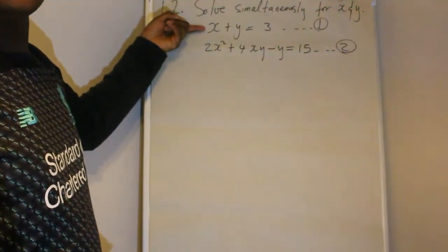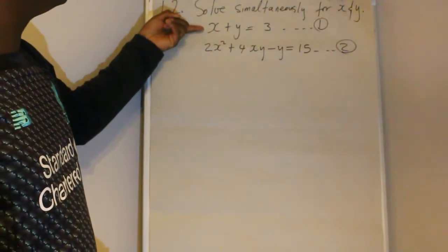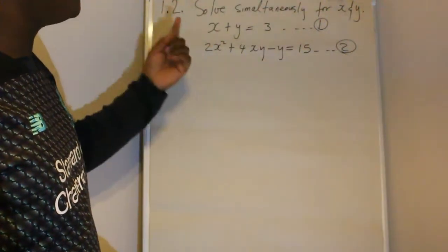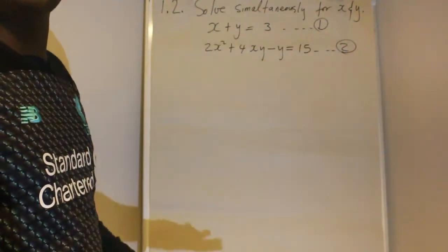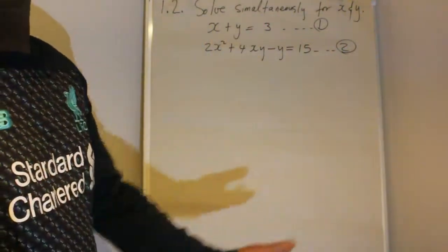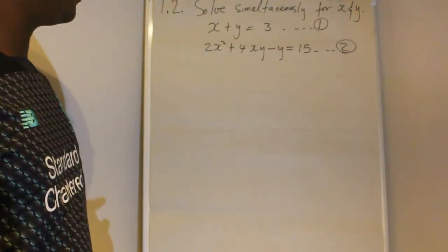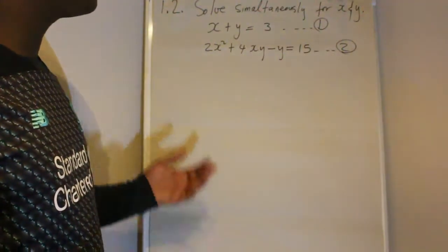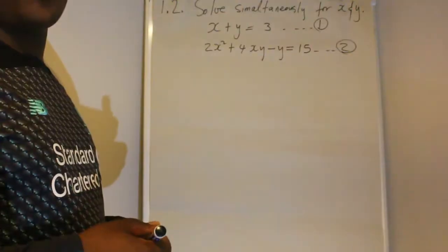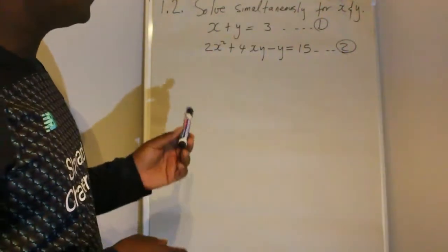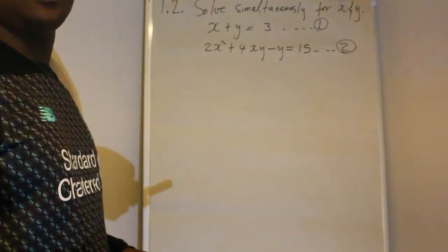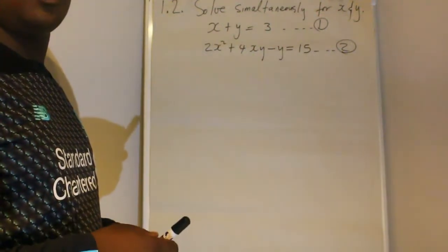So from this non-scary equation, you make x or y the subject of the formula — whichever is easier. In this case, I would like to make y the subject of the formula, which means I want to be left with y only on this side.